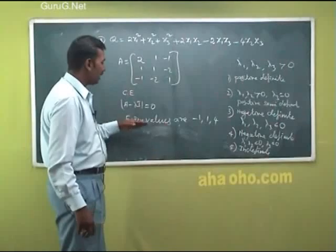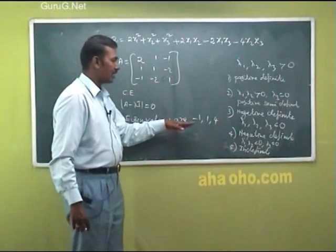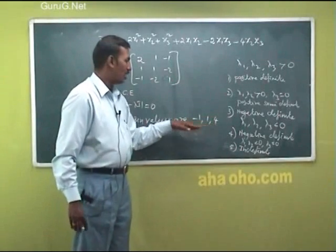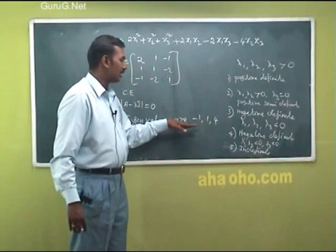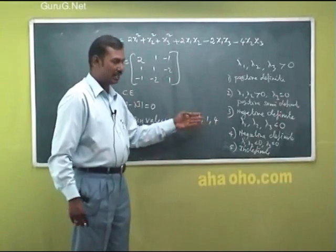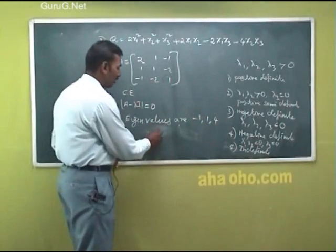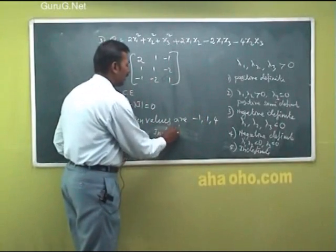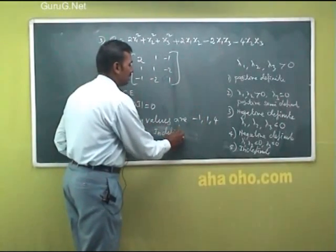In the example, the eigenvalues are −1, 1, and 4. Since they are a mix of positive and negative values, we call it indefinite in nature.